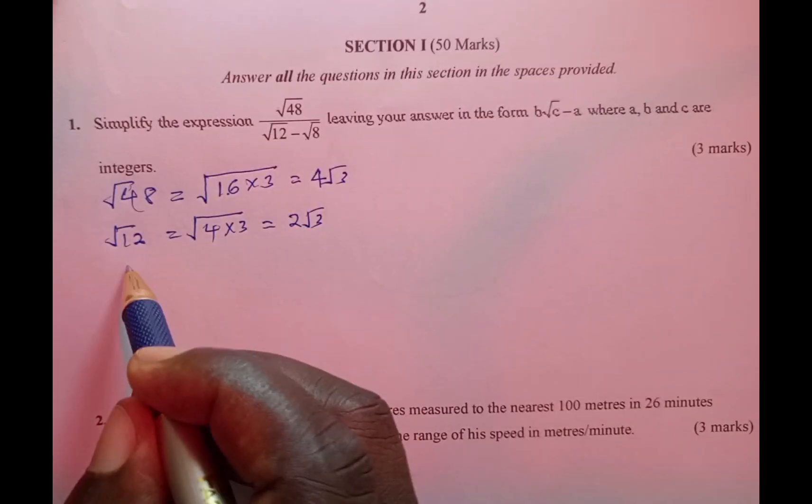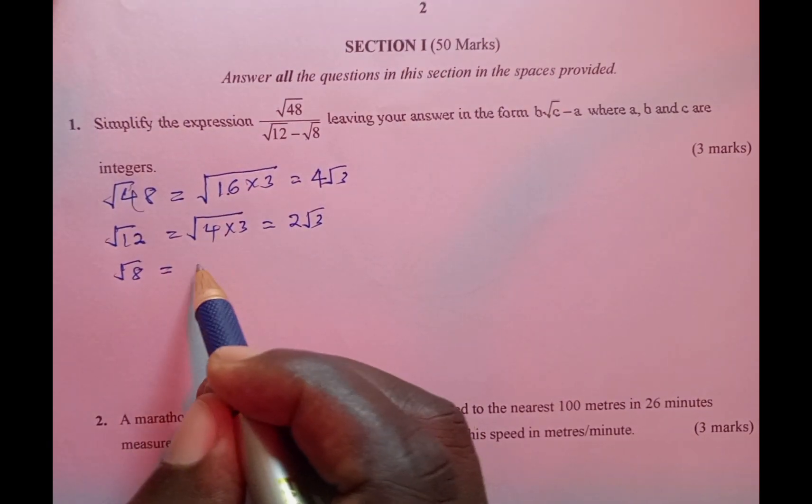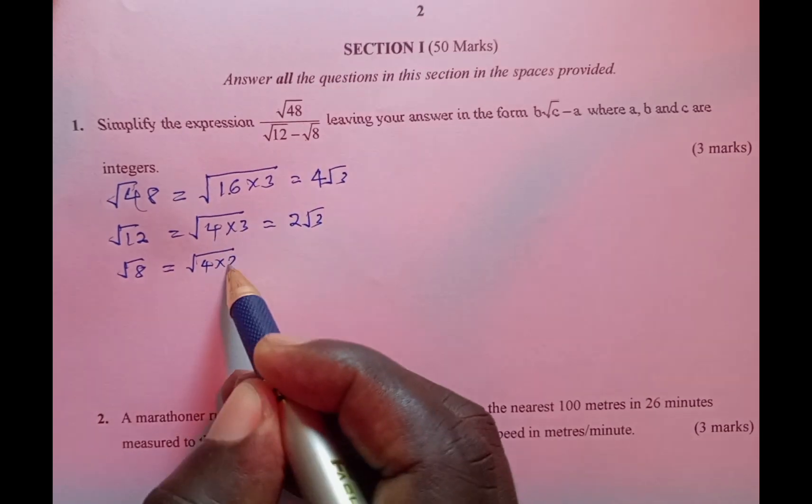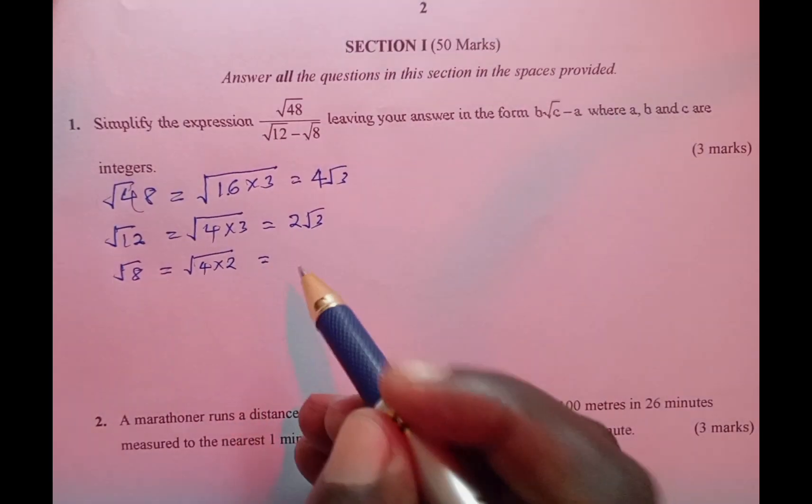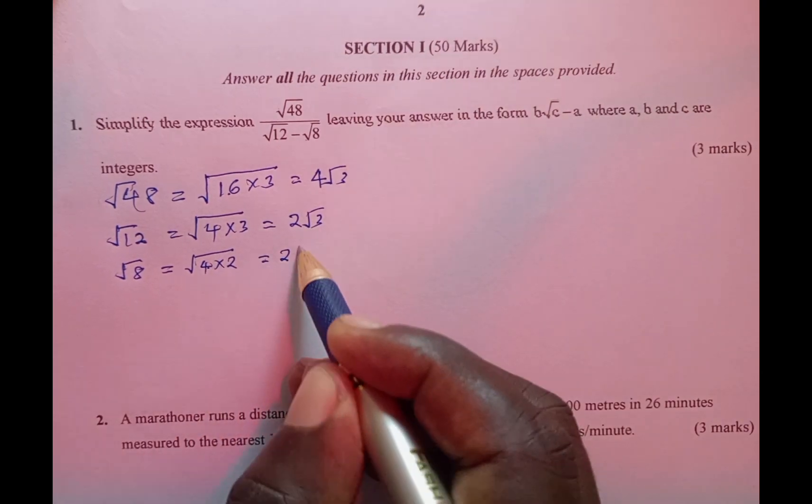And lastly we have √8, which is going to be written as √4 times 2. By doing so, we are going to have 2, since the square root of 4 is 2, then √2.